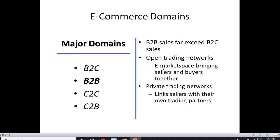The second domain is B2B — business to business. B2B sales far exceed B2C sales and it is a major element in e-commerce. A B2B transaction happens between two business houses. It brings both sellers and buyers together and can occur either in open trading networks, where everyone is at one place, or in private trading networks, where only your own trading partners are present. A particular trading network can be created and any kind of transaction can happen within that network. B2B is one of the most important e-commerce domains.